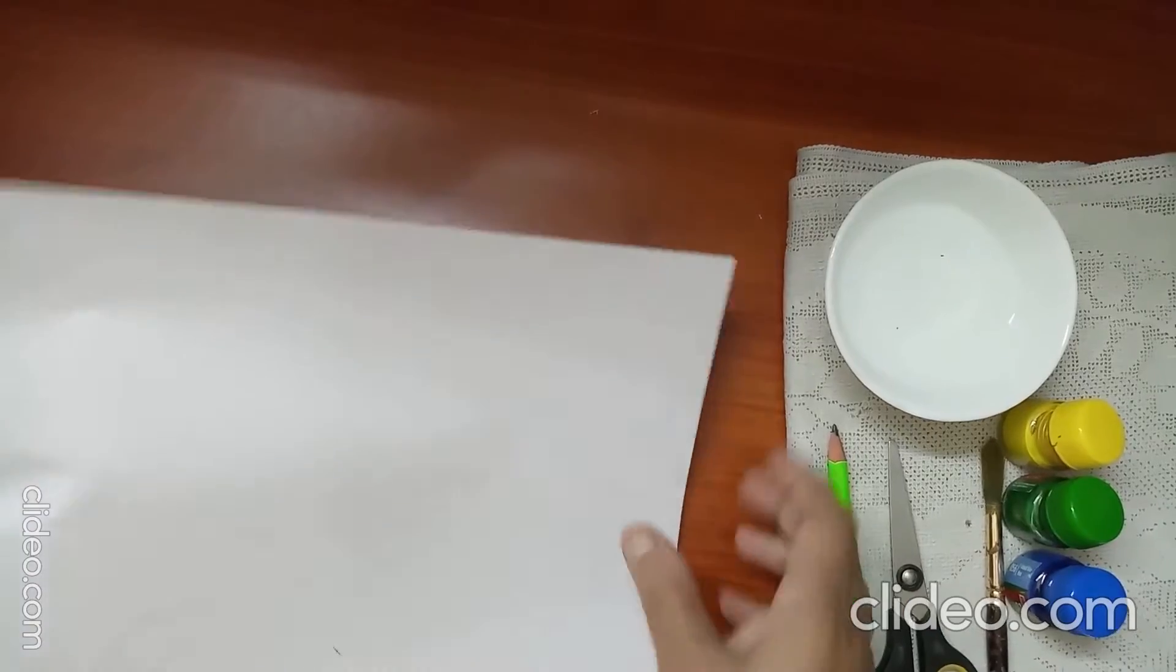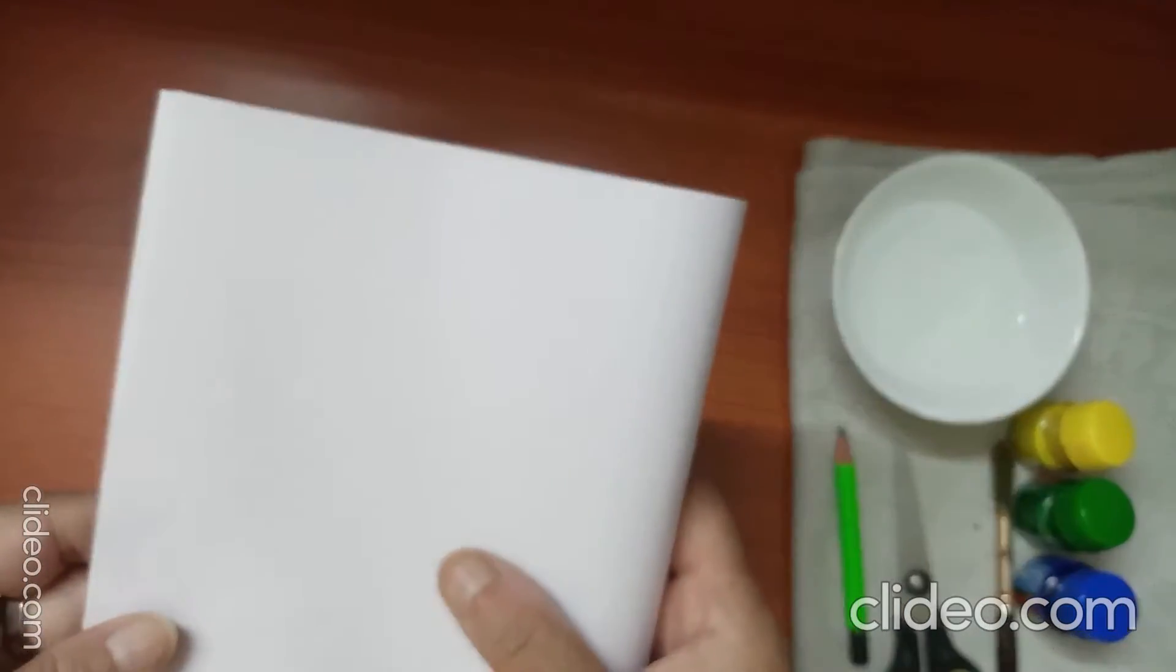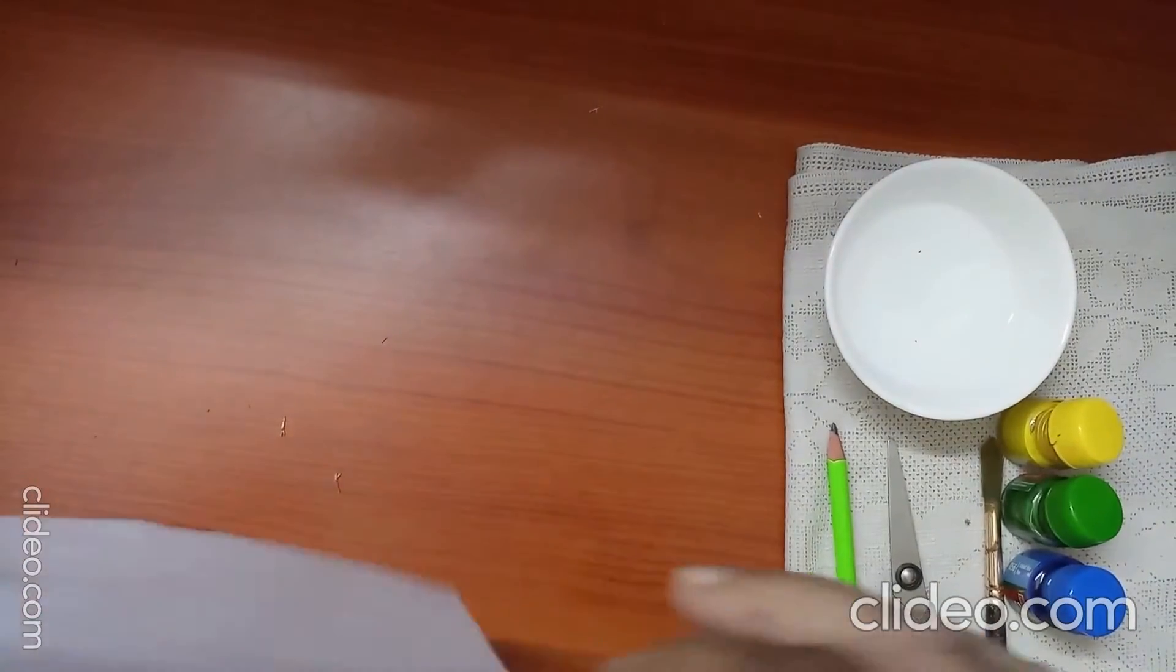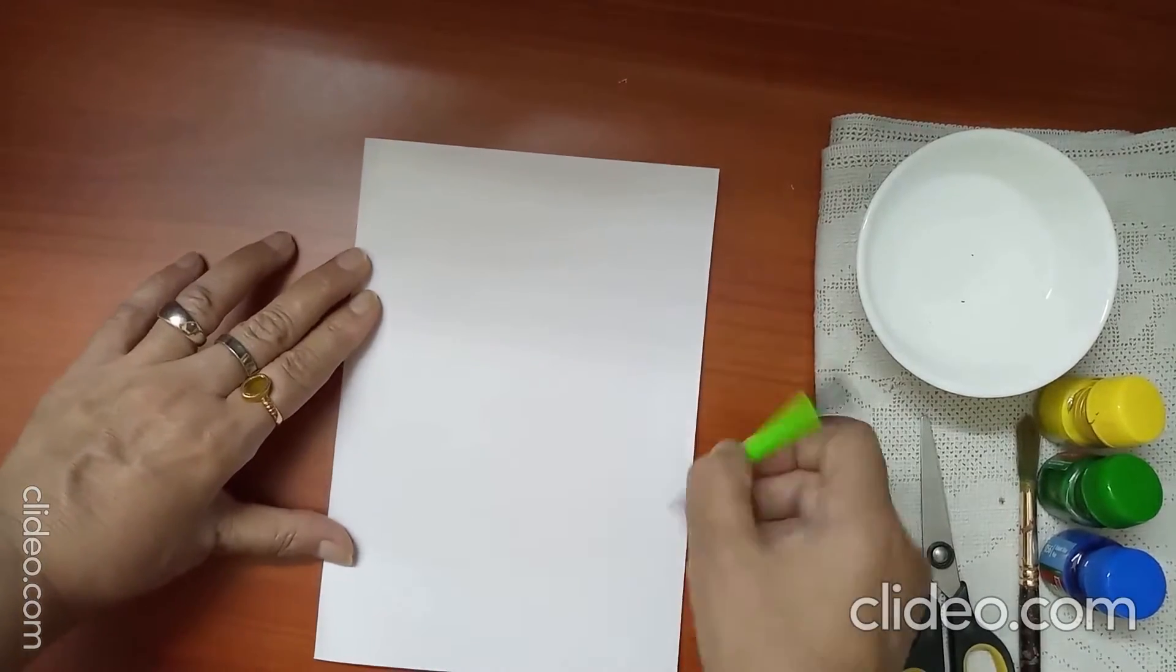Now fold this sheet of paper into half, press from the crease. Now from the crease side of the paper we will draw one side of the butterfly.